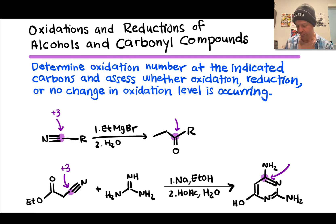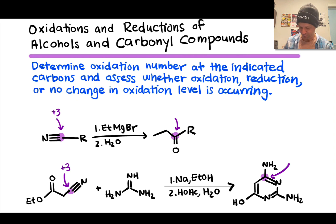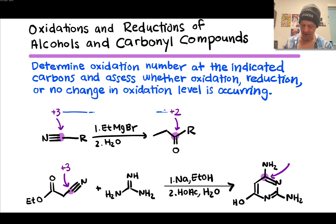On the product side of the first reaction, the cyano or nitrile carbon has turned into a carbonyl carbon involved in a ketone. If we imagine giving both pairs of bonding electrons in the C=O double bond to the more electronegative oxygen atom, that leaves this carbon with a +2 charge. So the oxidation state is +2. Going from +3 in the reactant to +2 in the product is a decrease in oxidation number, corresponding to reduction.